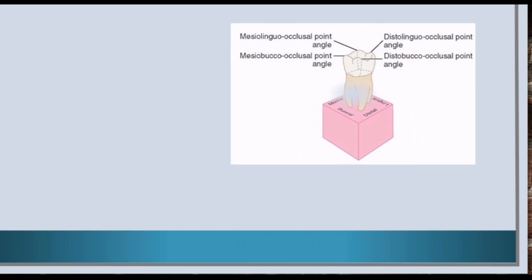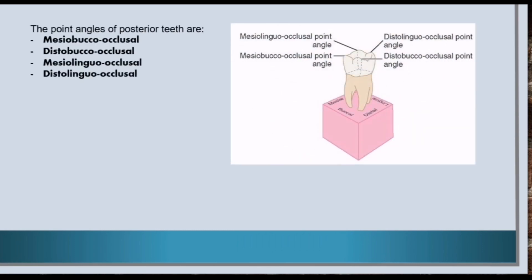The point angles of posterior teeth are: mesiobuccal occlusal, distobuccal occlusal, mesiolingual occlusal, and distolingual occlusal.